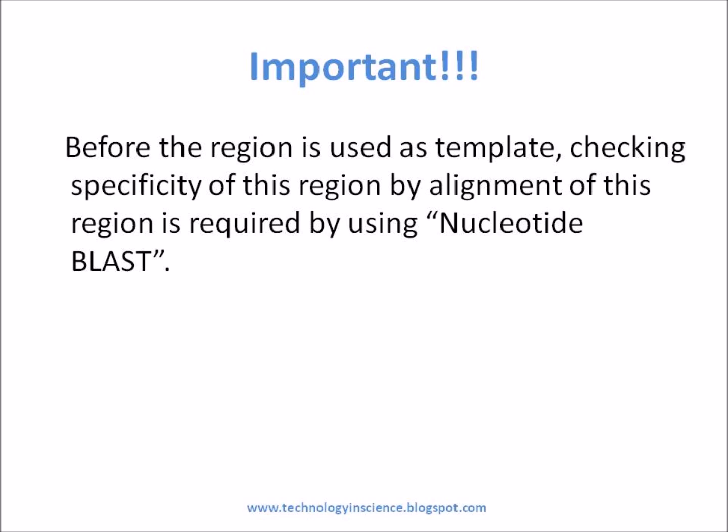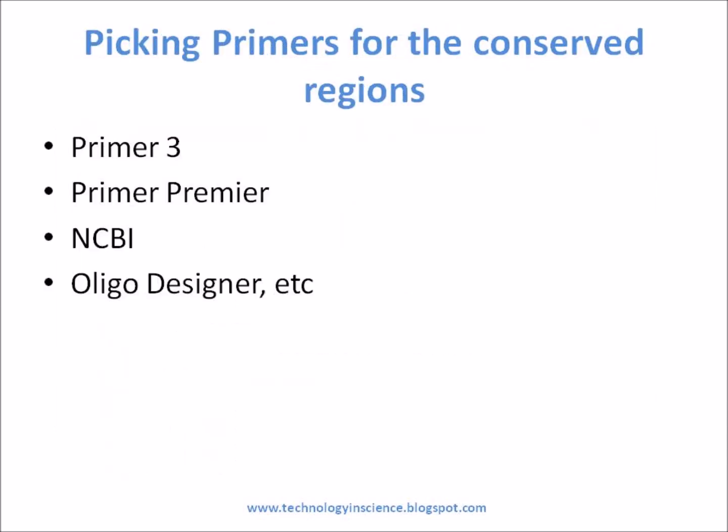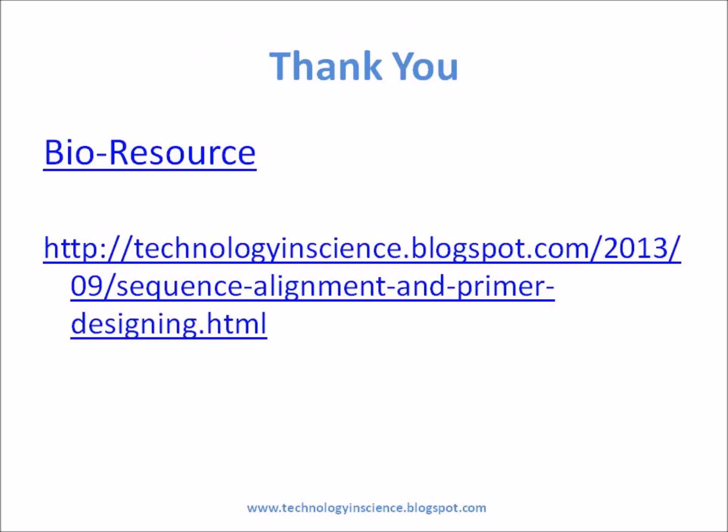Conserved regions are important because these regions will have the least mutations, so they are ideal regions for designing primers and probes for real-time PCR. Primers can be picked up from the conserved region using one of these software tools.